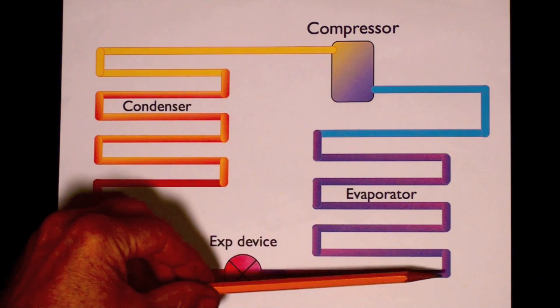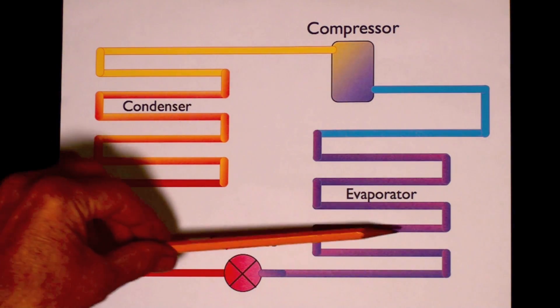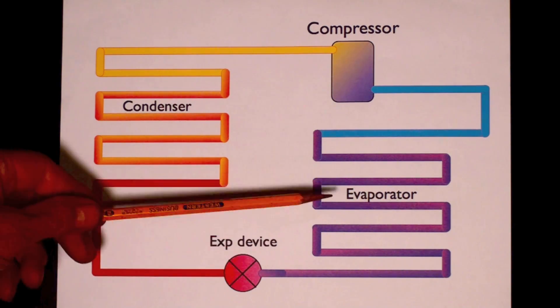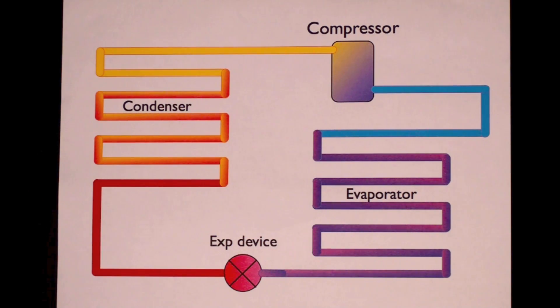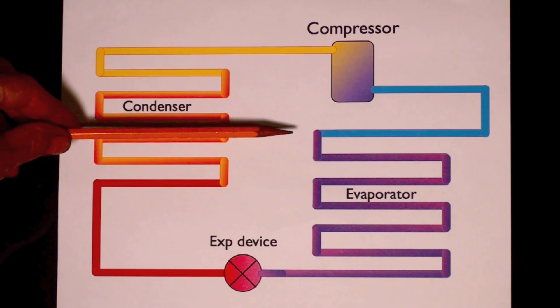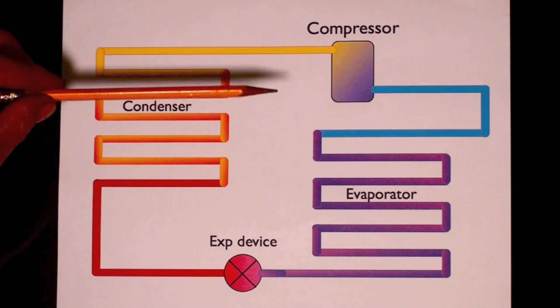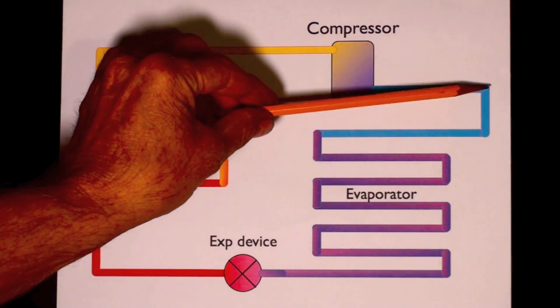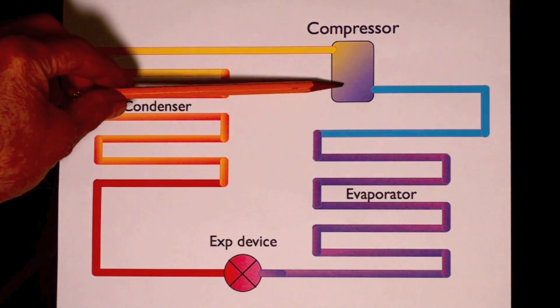As the refrigerant passes through the evaporator, again we're a saturated mix, we're half liquid, we're part liquid and part gas. And so it is evaporating at a specific temperature. Once it gets to the end of the evaporator, it's going to be all gas. And that is the suction line coming up to the compressor.